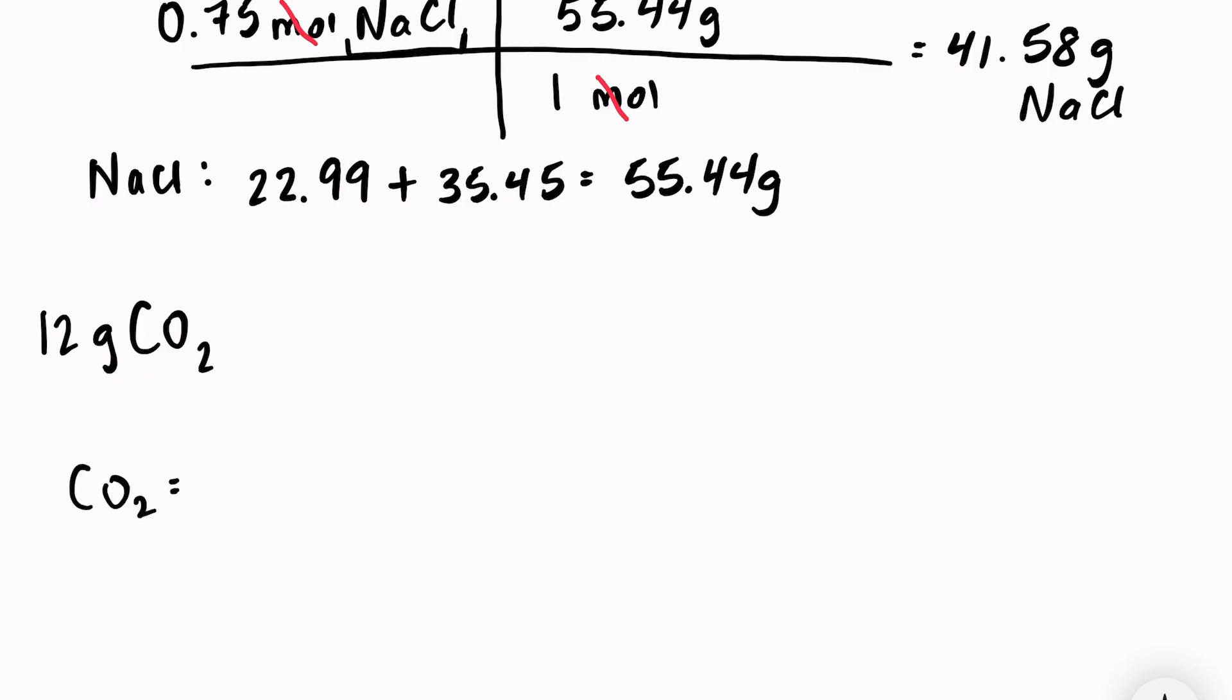The first thing we need to do is figure out the molar mass of carbon dioxide, which is equal to the mass of carbon, which is 12.01, plus two oxygens, because there's an O2, so plus 16.00 plus 16.00. That will give us a mass of 44.01 grams of carbon dioxide.